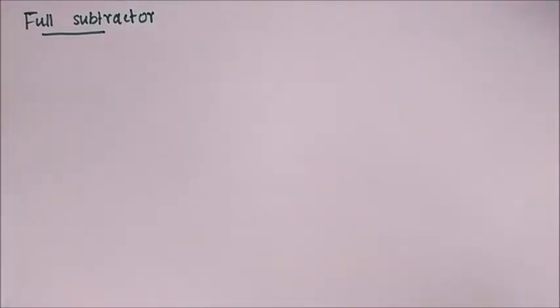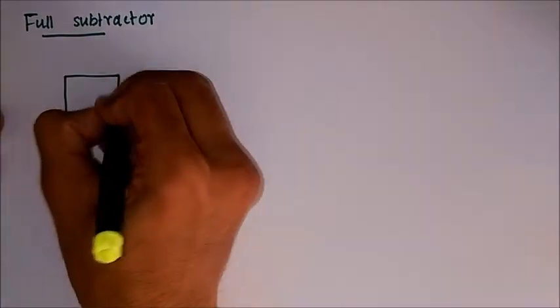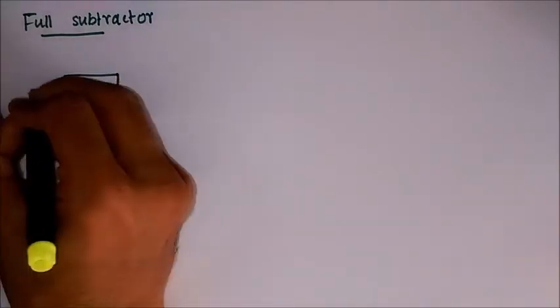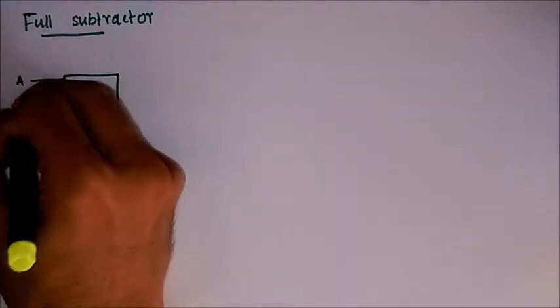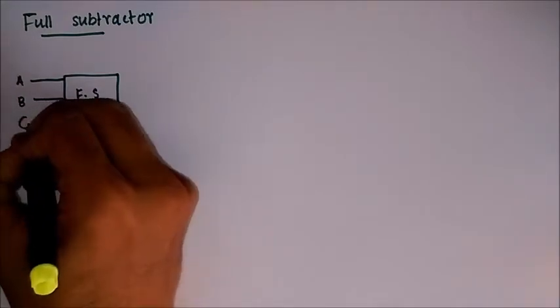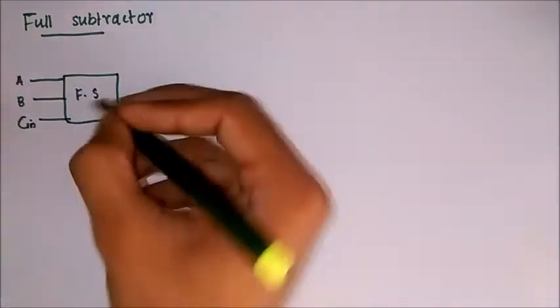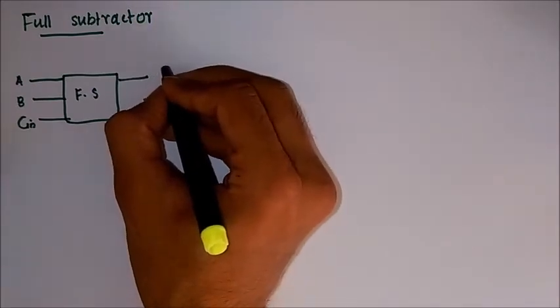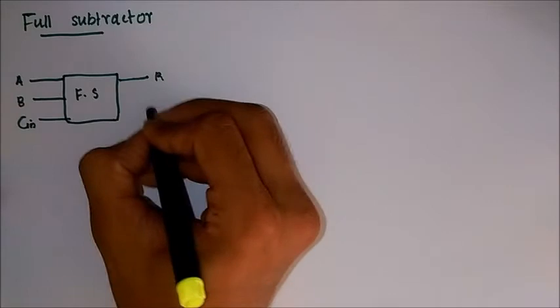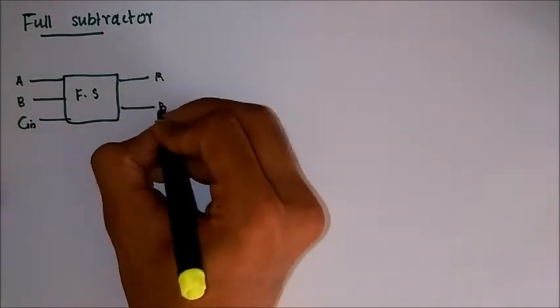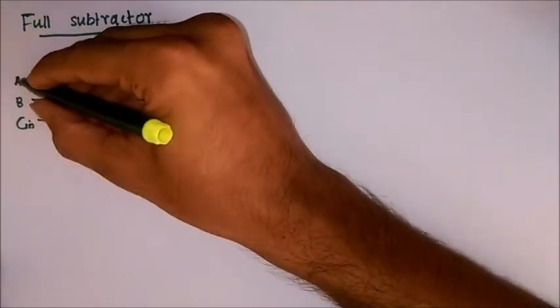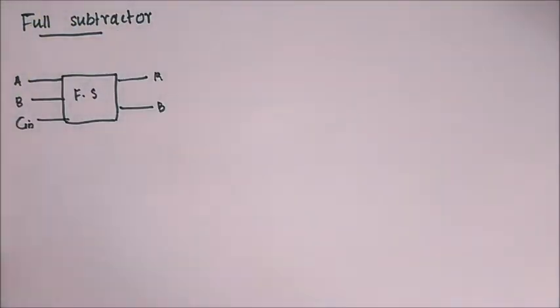Now full subtractor, like full adder, is a circuit that takes three inputs, that is A, B, and a C in or borrow in, or whatever you may call it. And here it produces a difference and a borrow out. The only point to note here is that each of these A, B, C in are single bits, that is either a zero or one.